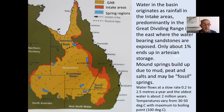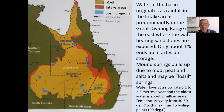In the west, particularly on the western margins of South Australia, you can get enormous mound springs built up due to peat and salt deposits — effectively fossil springs — which appear as mesas in some regions with no evident water. Water flows at a slow rate, only 0.2 to 2.5 metres per year, so some of the oldest water is several million years old. Temperatures can vary from warm — around 30 degrees — to even boiling temperatures locally.